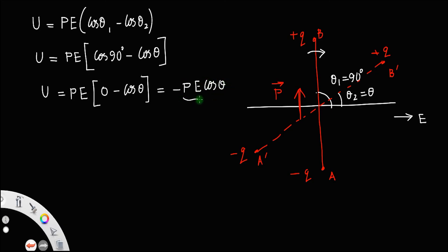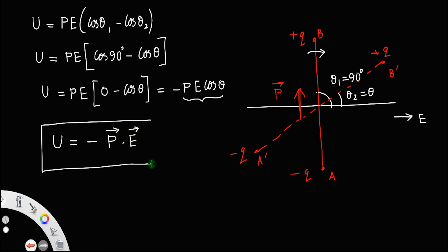Now, pE cosθ — you know that ab cosθ equals a dot b — so pE cosθ equals p dot E. Therefore the potential energy U = −p·E, that is, the negative of the dot product of the dipole moment and the electric field.